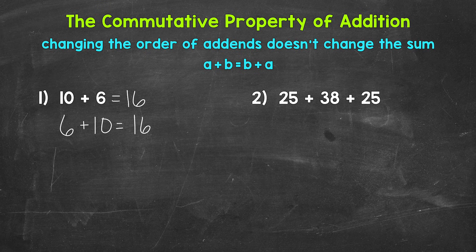Let's move on to number 2, where we have 25 plus 38 plus 25. So we have 3 addends, 3 numbers being added together. Let's use the commutative property to change the order of the addends and make this problem simpler to work through.